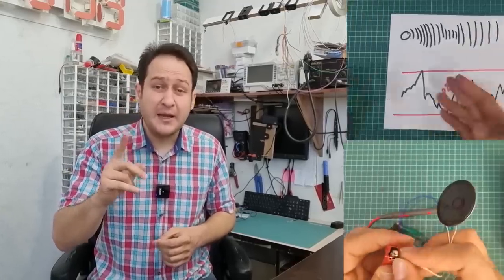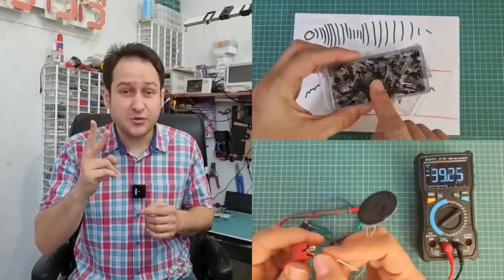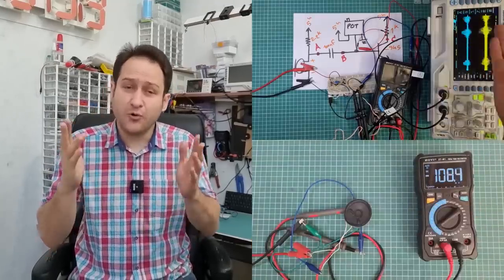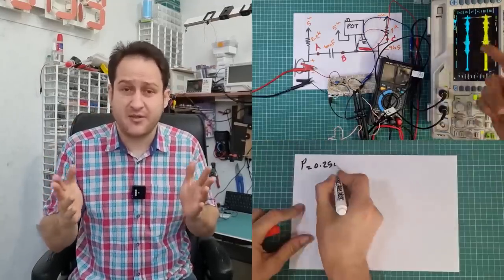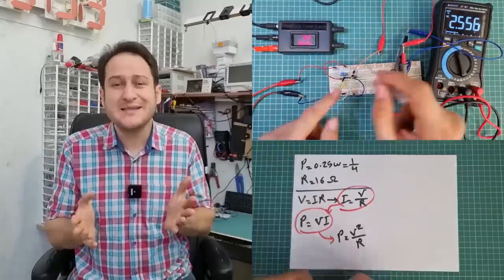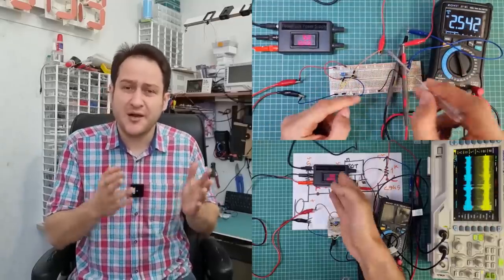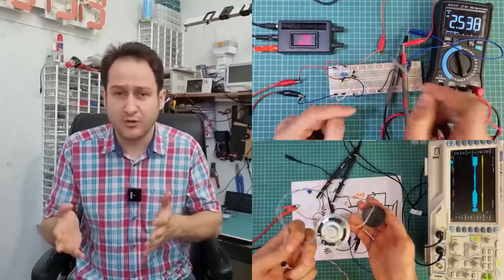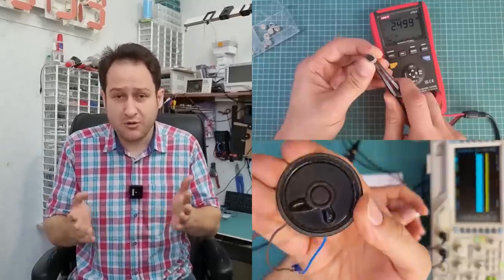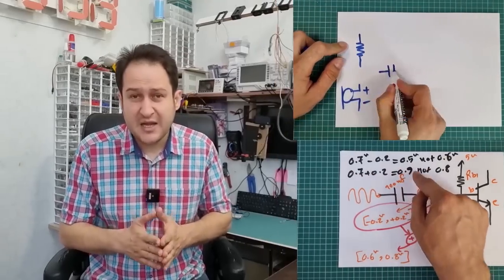In a very simple diagram of such a circuit, there is at least one transistor. Two transistor diagrams work much better though. Transistors make it possible to amplify current or voltage, although transistors make the circuit more complex.